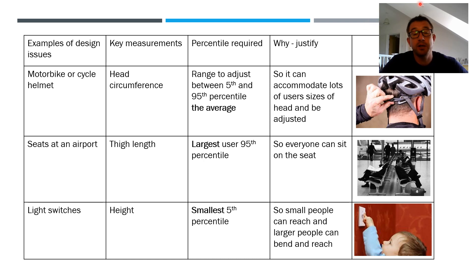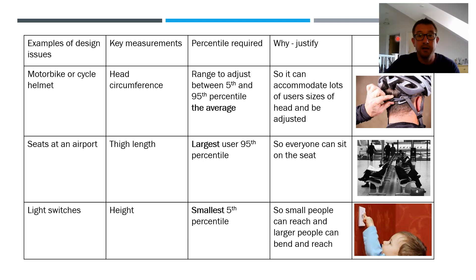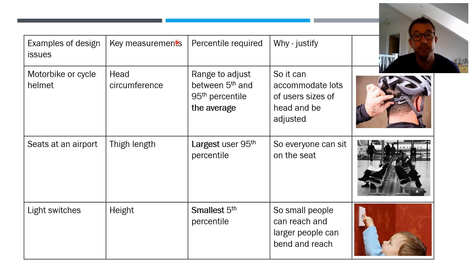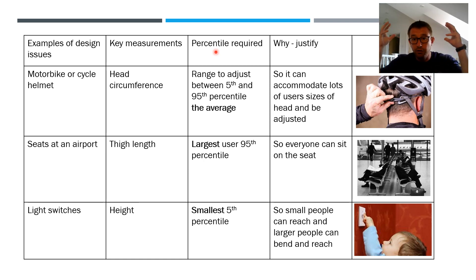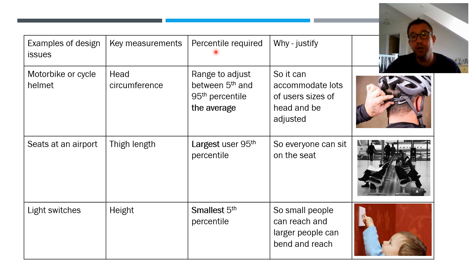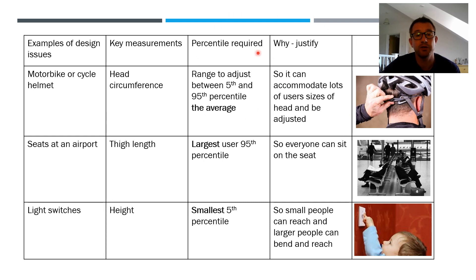Let's go through some design examples. For a bike or motorcycle helmet, the key measurement would be head circumference. I'd need a range from the fifth percentile up to the 95th to cover the most users. We also know cycle helmets have an adjustment strap to allow flexibility for different sizes. For an airport seat, I'd look at thigh length — the bum-to-knee length — designing for the 95th percentile so everyone can sit comfortably. For light switches, I'd measure people's height and use the fifth percentile, ensuring small people can reach up to it, while taller people can easily reach down.